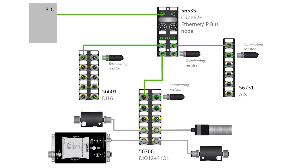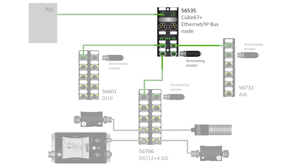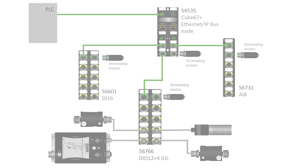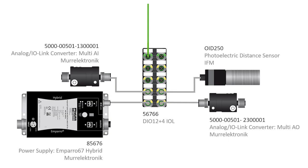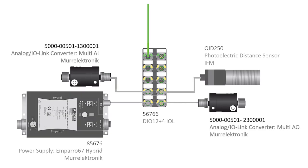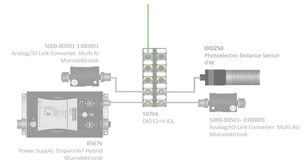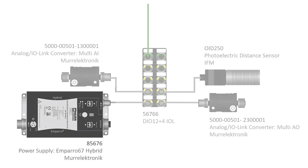This video is about setting up IO-Link devices with Cube67's web server. We will be using a Cube67 Plus Ethernet IP bus node and the IO-Link master module 56766. We have connected four IO-Link devices: two IO-Link analog converters, an IFM photoelectric distance sensor, and an IO-Link power supply.